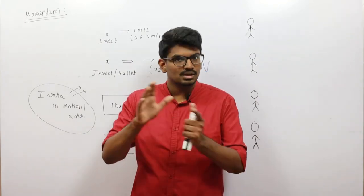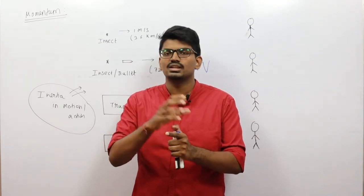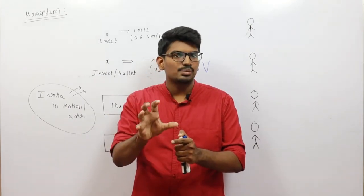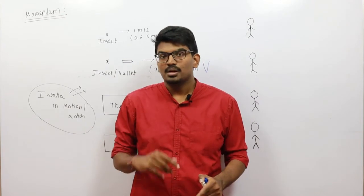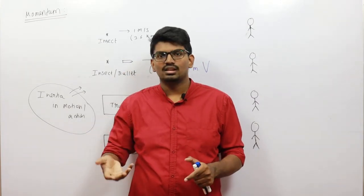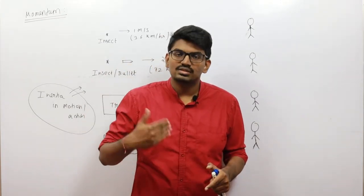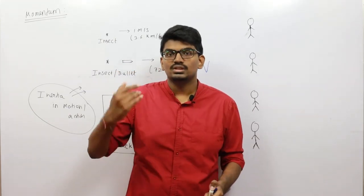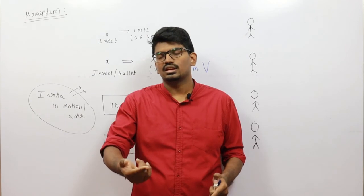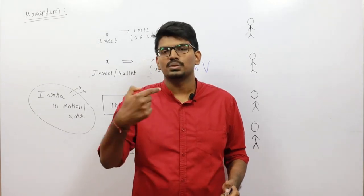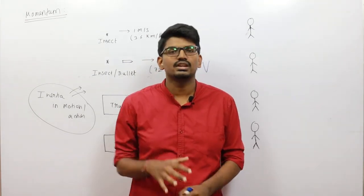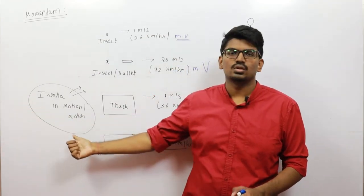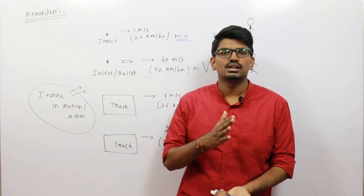For the ball: mass is less but velocity is more, so it has some momentum, but momentum will be less. For the table: as it moves downward its velocity also increases, and its mass is very high, so momentum is going to be very high — the effect will be significant. That effect due to mass in motion is inertia in action, and that is nothing but momentum.